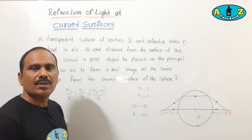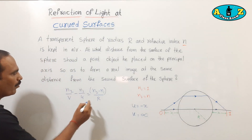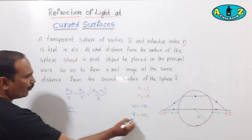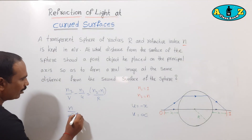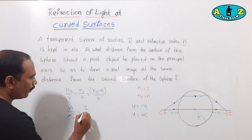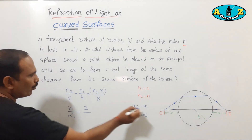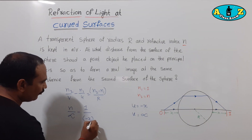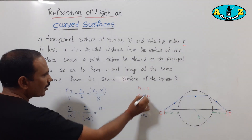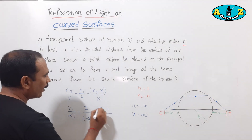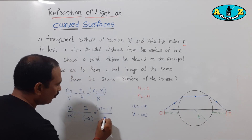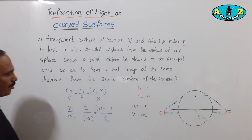Substituting these values in the curved surface formula: n2 over v is n over infinity, minus n1 over u is 1 over minus x, equals (n2 minus n1) over R, which is (n minus 1) over R. The radius of curvature equals r.